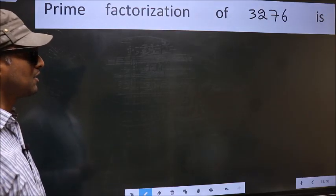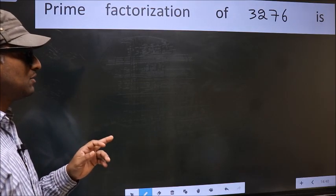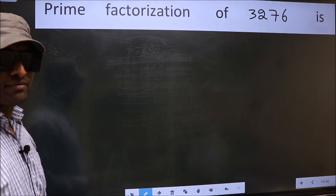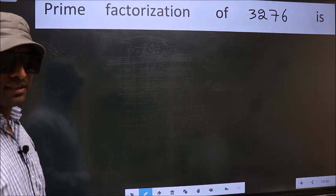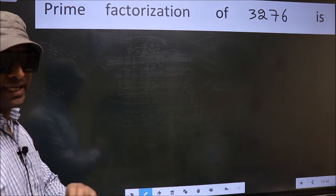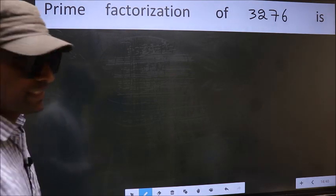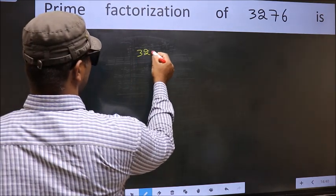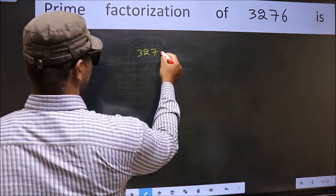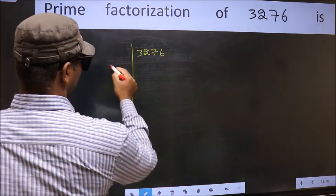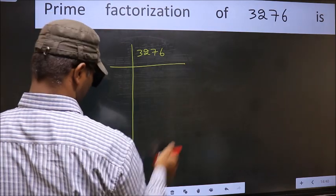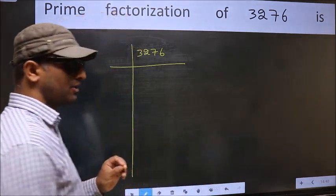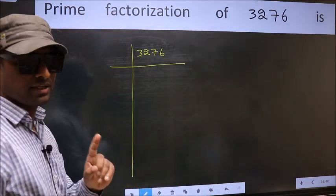Prime factorization of 3276. To do prime factorization, first we should frame it in this way. 3276. This is your step 1.